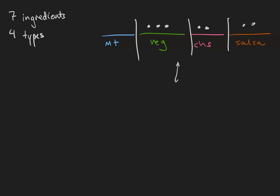Each of the dividers is going to be a one, and each of the dots is going to be a zero. So this diagram corresponds to the bit string 1, 0, 0, 0, 1, 0, 0, 1, 0, 0.